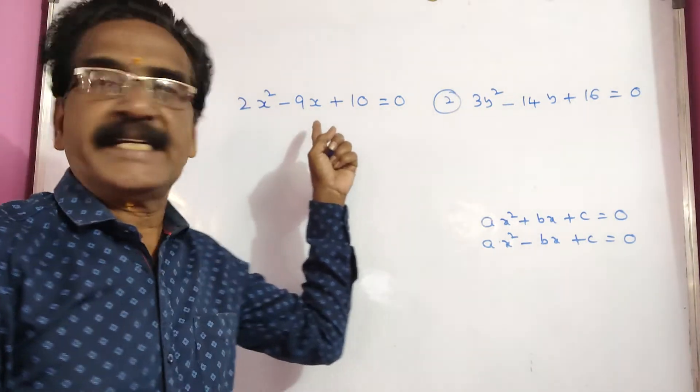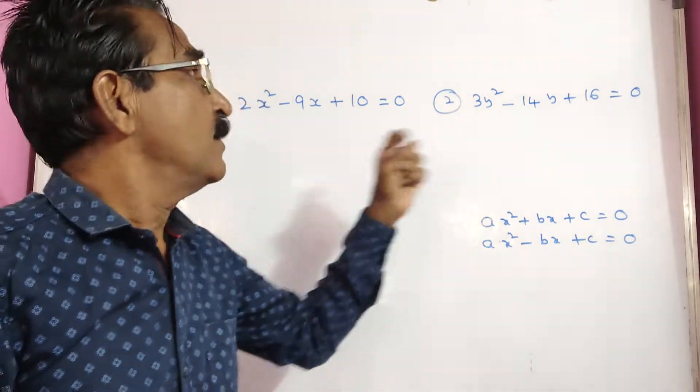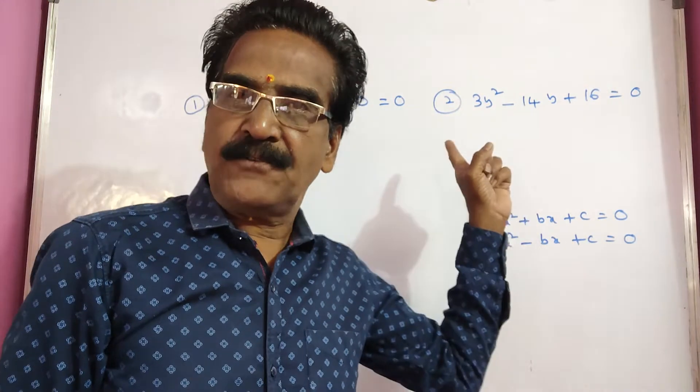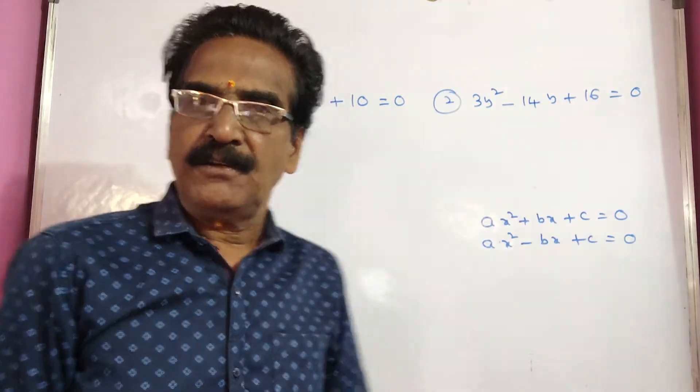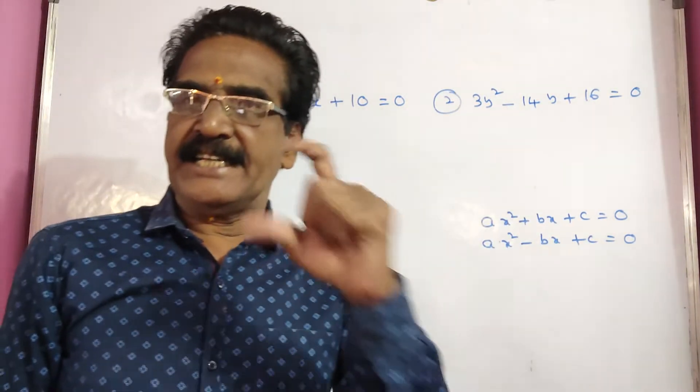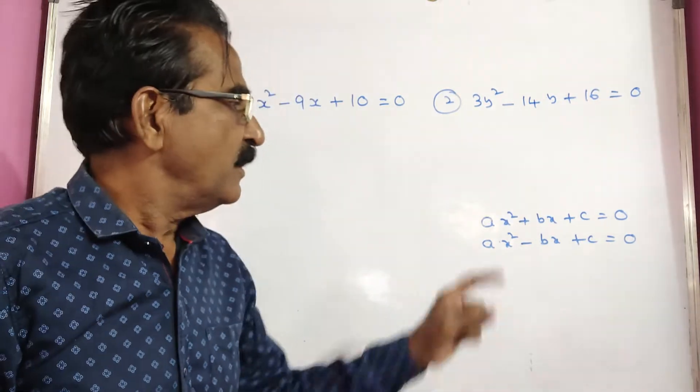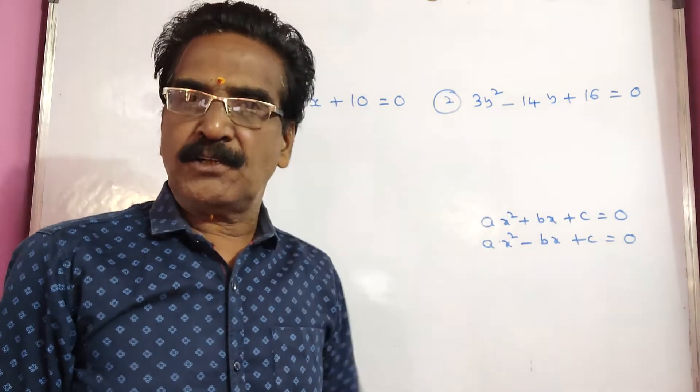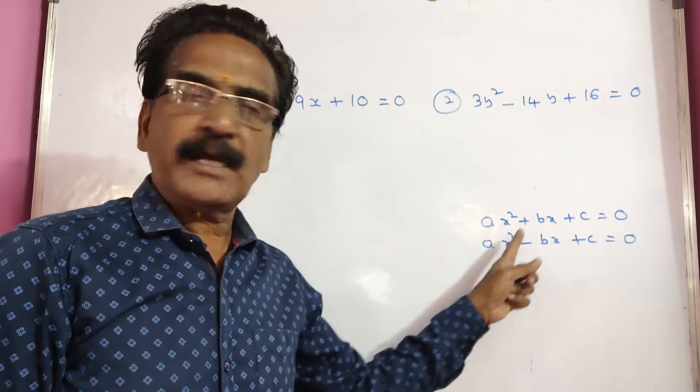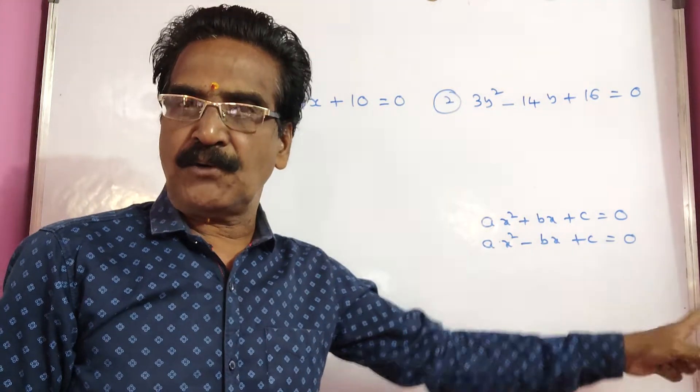See, 2x² - 9x + 10 = 0 and 3y² - 14y + 16 = 0. Friends, if the given quadratic equations are in the form of either ax² + bx + c = 0 form or ax² - bx + c = 0 form...